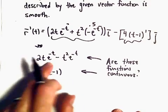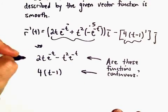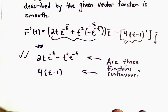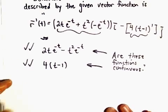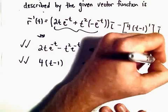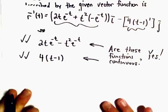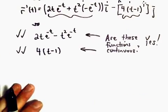If you subtract two continuous functions, they're continuous. So definitely that function is continuous. 4 times t minus 1 is definitely also continuous. So yes, both of these functions are continuous. So no issues just yet.